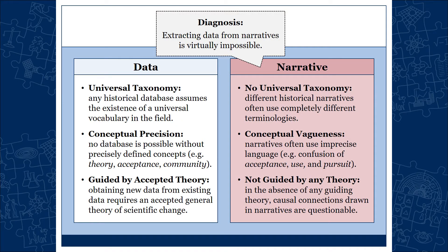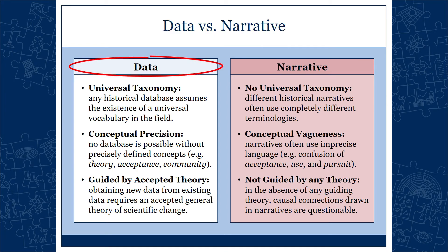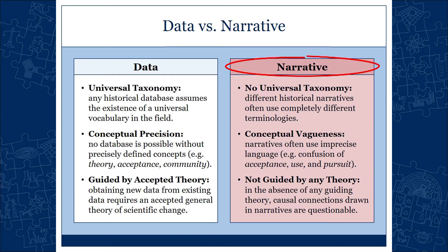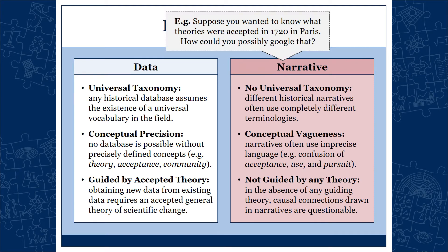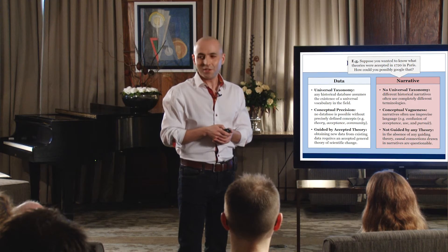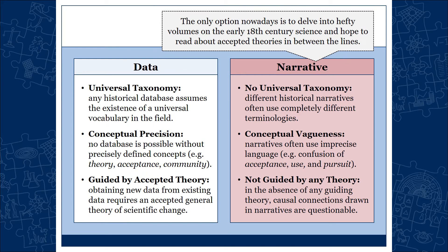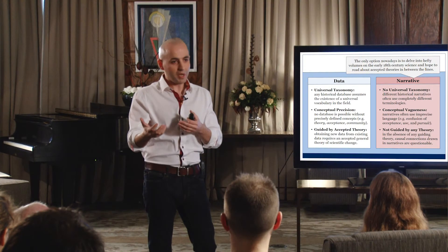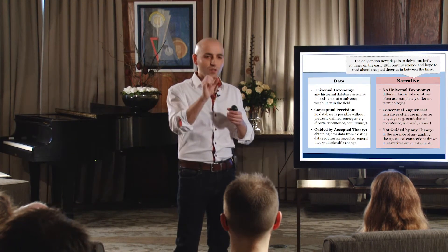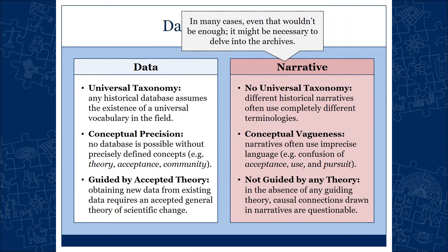The diagnosis is that extracting data from narratives is virtually impossible. Suppose it's your task to reconstruct the mosaic of Paris around the 1720s — there is no way to just Google that. Your best bet would be to delve into hefty volumes on early 18th-century science and hope to read about accepted theories between the lines, because whether a theory was accepted is usually not the major focus of those narratives. Very often that is not enough, and you end up delving into the archives yourself. And good luck with that if you're not a historian.